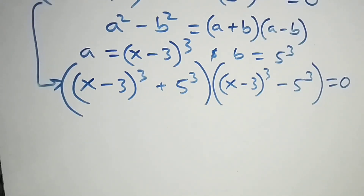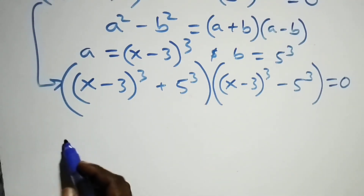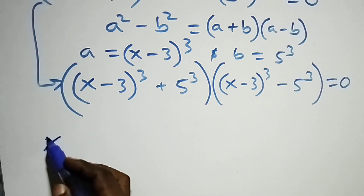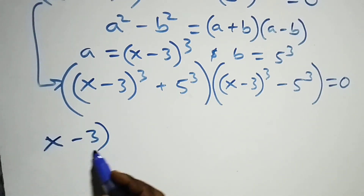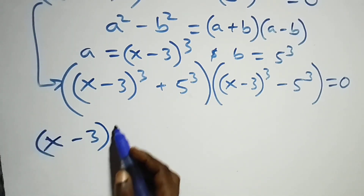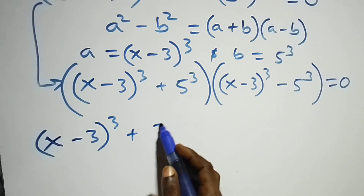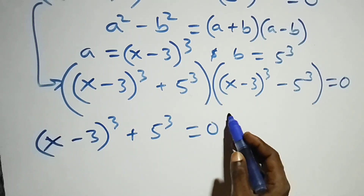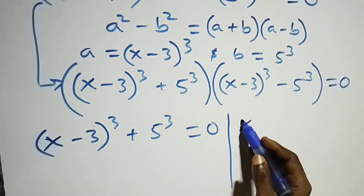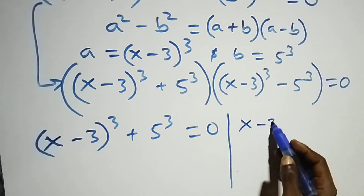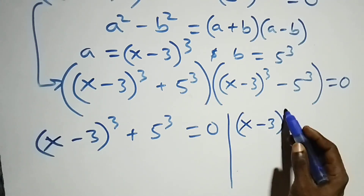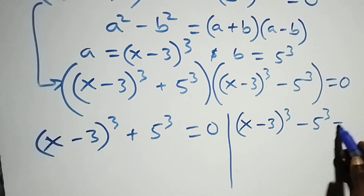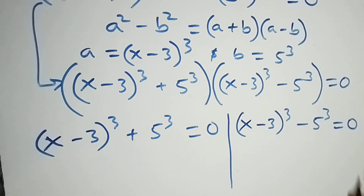Then we have two possible cases. Case one: (x minus 3) times 4 raised to power 3, plus 5 raised to power 3 equals zero; and case two: (x minus 3) times 4 raised to power 3, minus 5 raised to power 3, equals to zero.